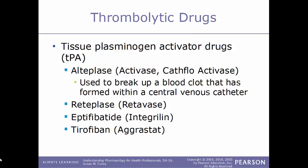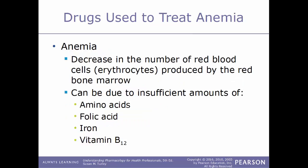Examples of TPAs include alteplase, also known as Activase or Cathflo Activase, used to break up blood clots that have formed within a central venous catheter; reteplase, also known as Retavase; eptifibatide, also known as Integrilin; and tirofiban, also known as Aggrastat.